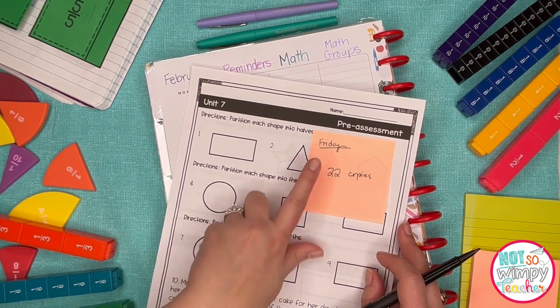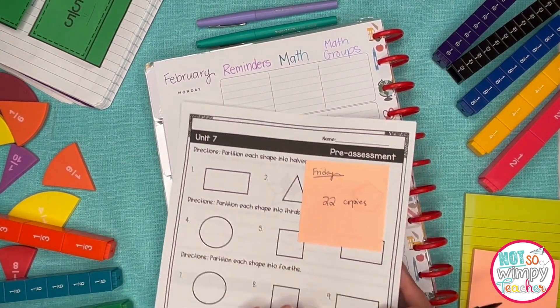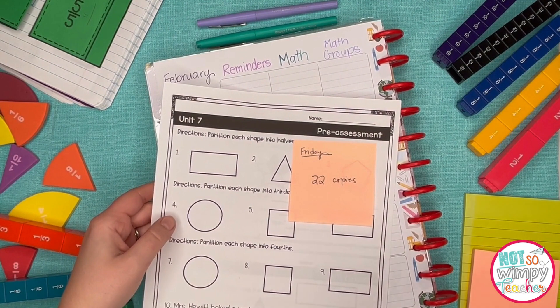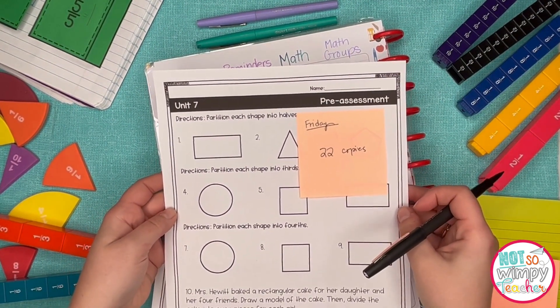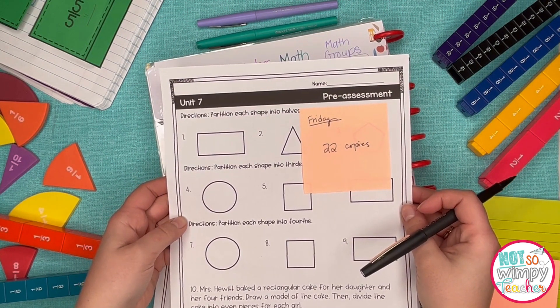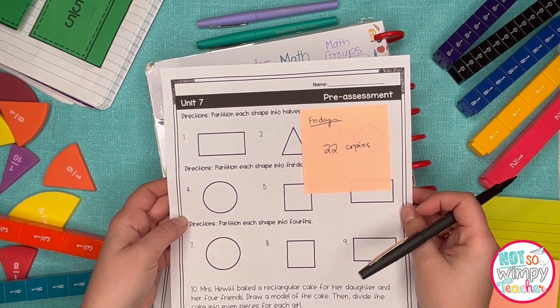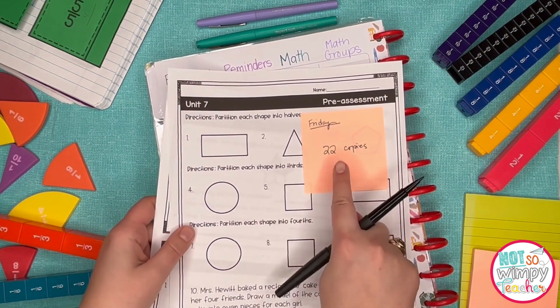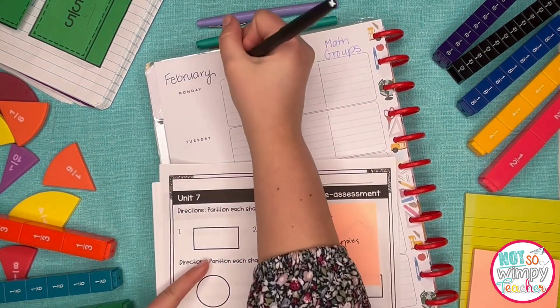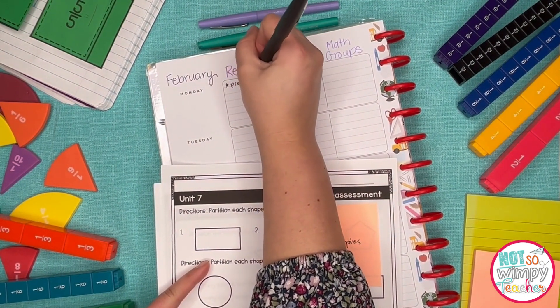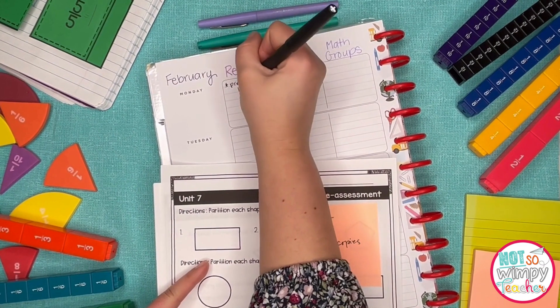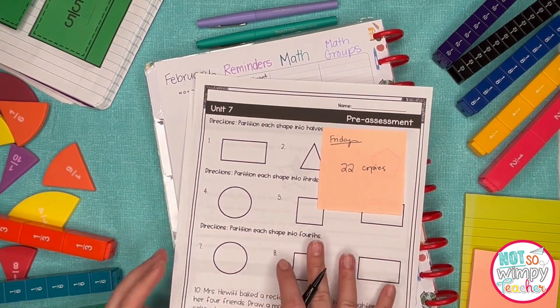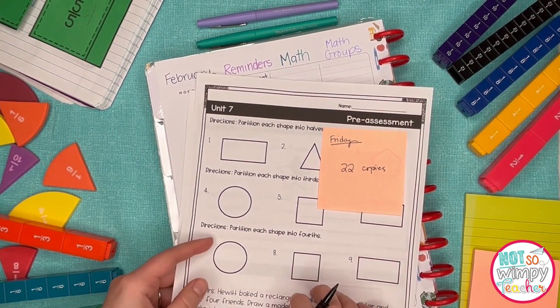So I'm actually going to be starting this the Friday before my instruction starts on Monday. The Friday before I'm going to be giving the pre-assessment. I love to pre-assess especially when it's a skill that is just so brand new to students. The pre-assessment is going to show me who already has some background knowledge, who is already going to need support from me, who can I start extending with. I need 22 copies of it.